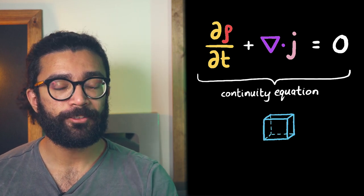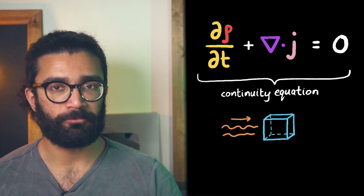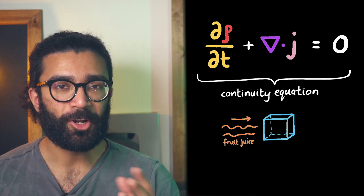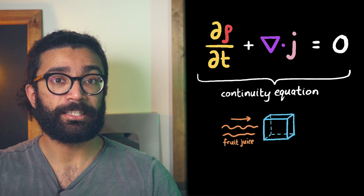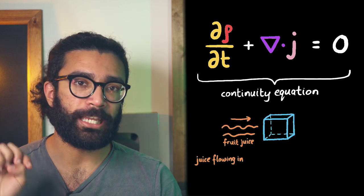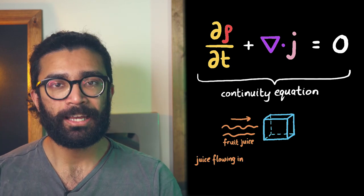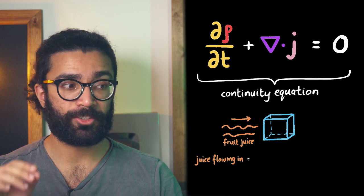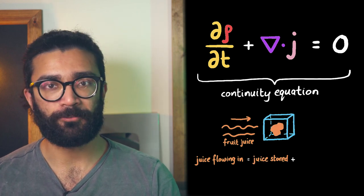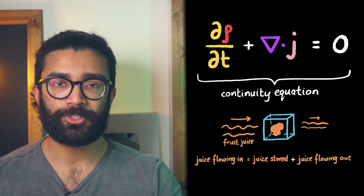The continuity equation basically tells us something quite logical. Let's think about a region of space through which a fluid, let's say fruit juice, is flowing. The continuity equation simply says that the amount of fluid that is flowing into this region of space is equal to the amount that gets stored in this region plus the amount that flows out.